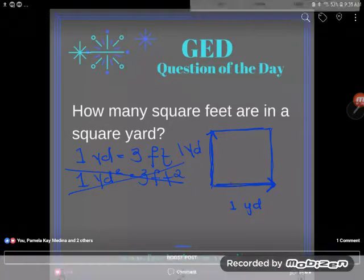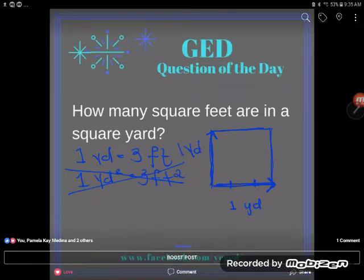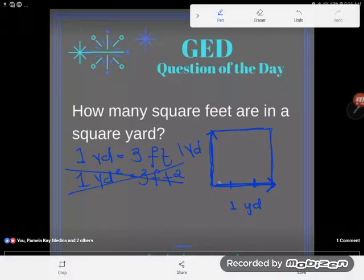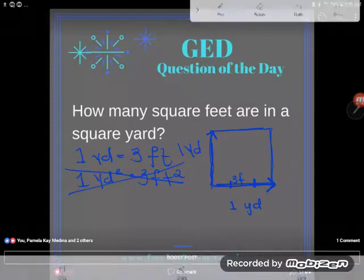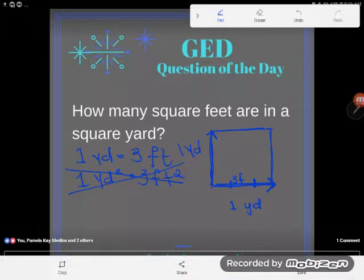one single linear yard—the side of this square—is equal to three feet. I have three feet here: one, two, three feet. However, if I want to talk about how many square feet it is, I need to cover